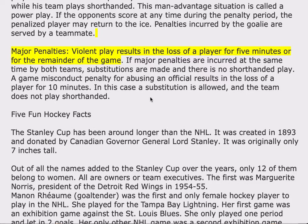Major penalties: violent play results in the loss of a player for five minutes or for the remainder of the game. If major penalties are incurred at the same time by both teams, substitutions are made and there is no short-handed play. A game misconduct penalty for abusing an official results in the loss of a player for ten minutes. In this case, a substitution is allowed and the team does not play short-handed.